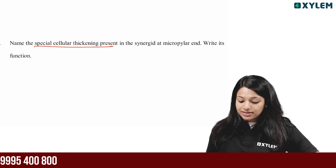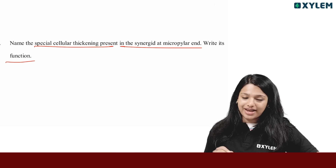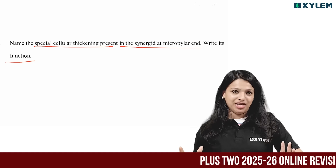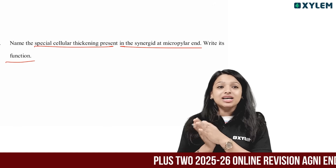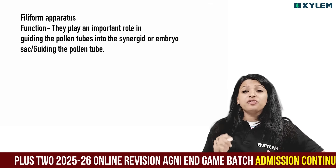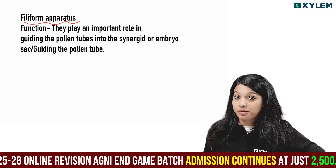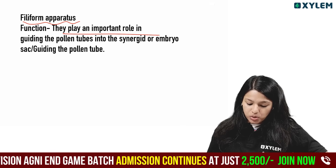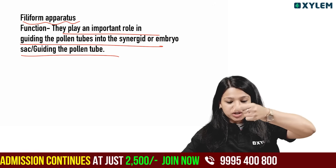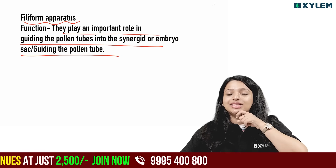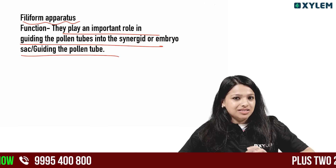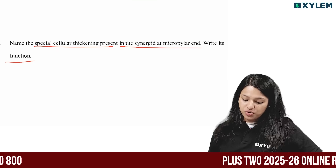Find out and name the special cellular thickening present in the synergids at the micropylar end, and state its function. The special cellular thickening is called the filiform apparatus. They produce a chemical and play an important role in guiding the pollen tube. The filiform apparatus provides chemical guidance — these are synergid finger-like projections.